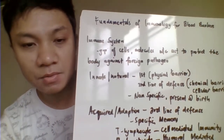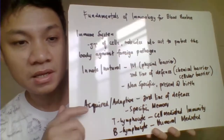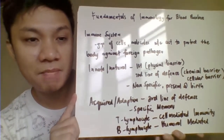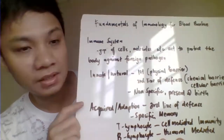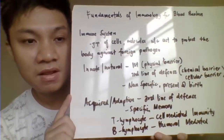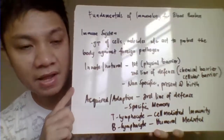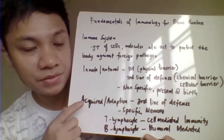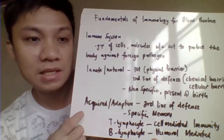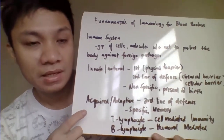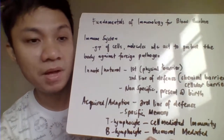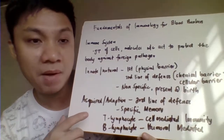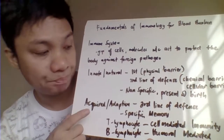The immune system involves different cells, molecules, and organ systems in our body working together primarily for the elimination of harmful pathogens that enter our body. We classify the immune system as either innate — also called natural immunity — versus acquired or adaptive immunity. Natural innate immunity has the property of being non-specific, reacting to whatever harmful pathogen enters the body, and is conferred upon birth, most likely from our parents or mother.